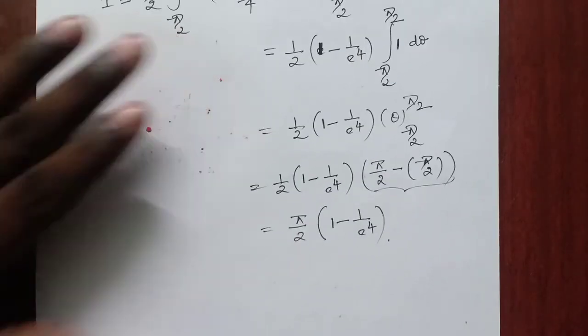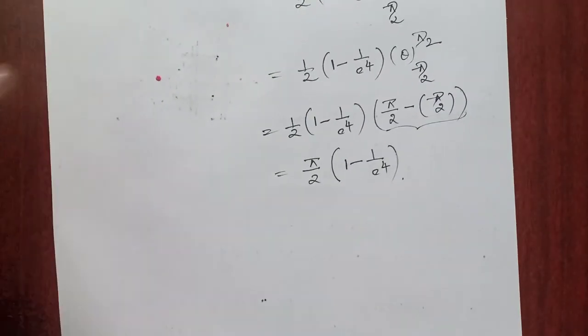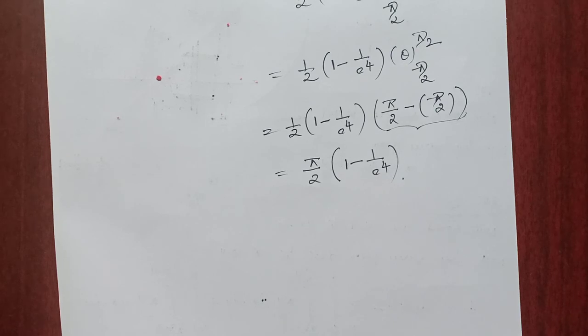This is the final answer: pi by 2 times 1 minus 1 by e to the power 4. Thank you, students. Please do subscribe and share my YouTube channel.